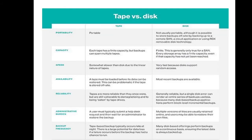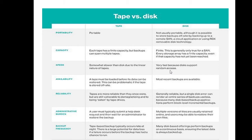Comparing tape and disk: Portability — tape is usually more portable, while disk is not usually portable, although it's possible to store backups off-site by backing up to a remote SAN, a cloud application, or using RDX removable disk technology. Capacity — each tape has finite capacity but backups can span multiple tapes; disk storage arrays also have finite capacity. Speed — tapes are somewhat slower than disk due to the linear nature of tapes, while disk is very fast because it supports random access.